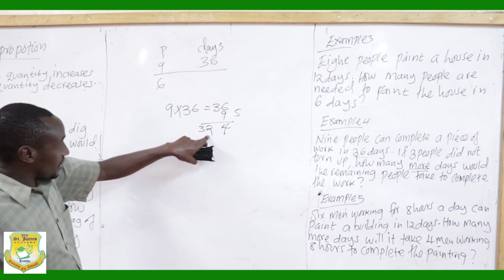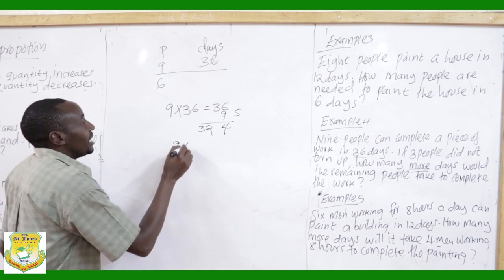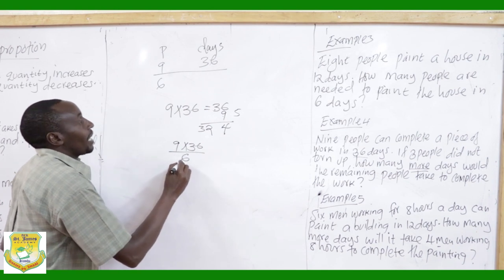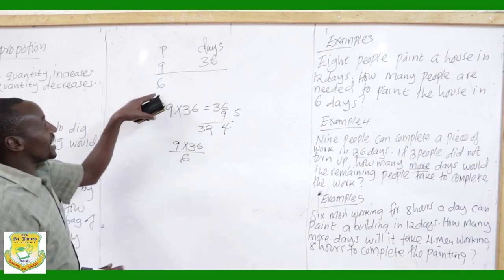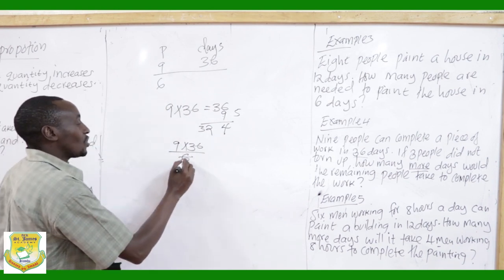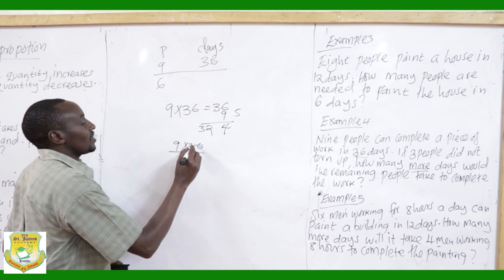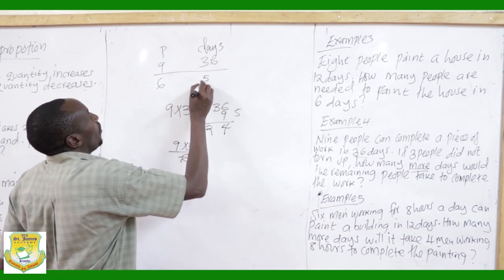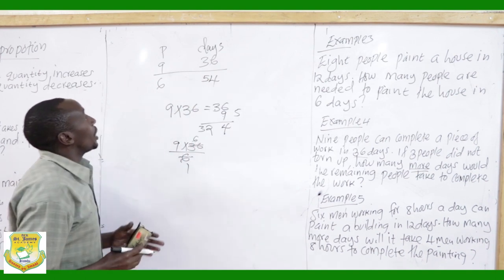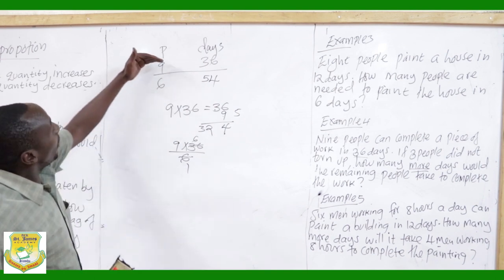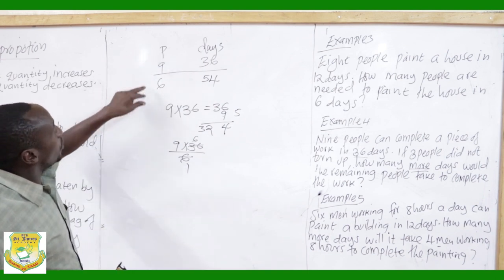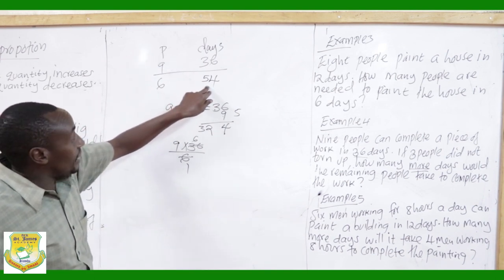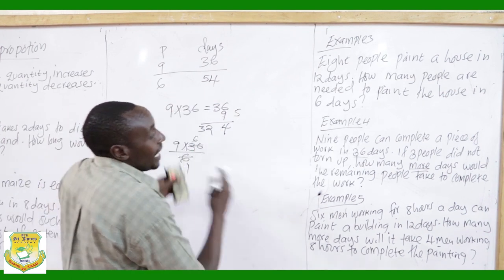We divide 324 by 6, because now there are only 6 people. Nine times 36 divided by 6: cancelling gives 54. So the 6 remaining people will take 54 days. When the number of men reduces to 6, the number of days increases to 54.